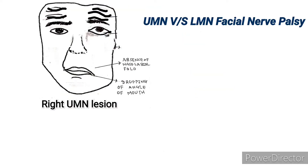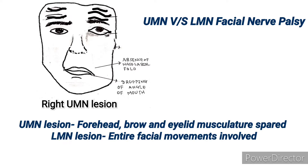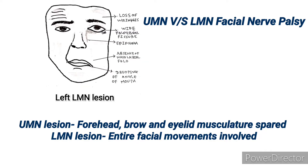In upper motor neuron lesion, the forehead, eyebrows, and eyelid musculature are spared. The child will have flattened nasolabial fold and drooping of mouth in UMN lesion. While the entire face is affected in LMN lesion ipsilaterally — loss of wrinkle, widened palpebral fissure, epiphora, Bell's phenomenon, flattened nasolabial fold, and drooping of mouth will occur ipsilaterally in LMN lesion.